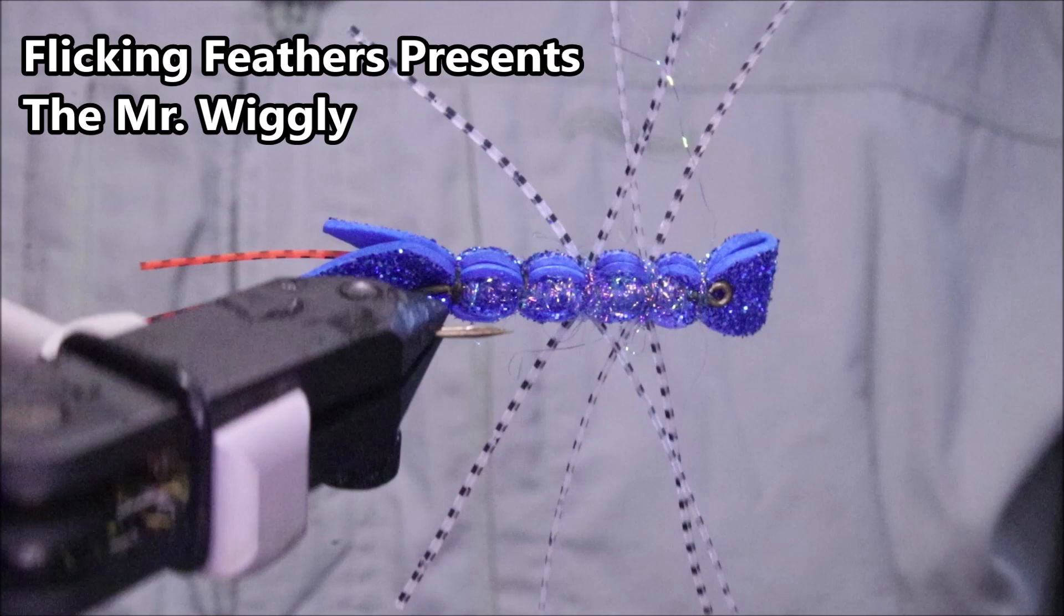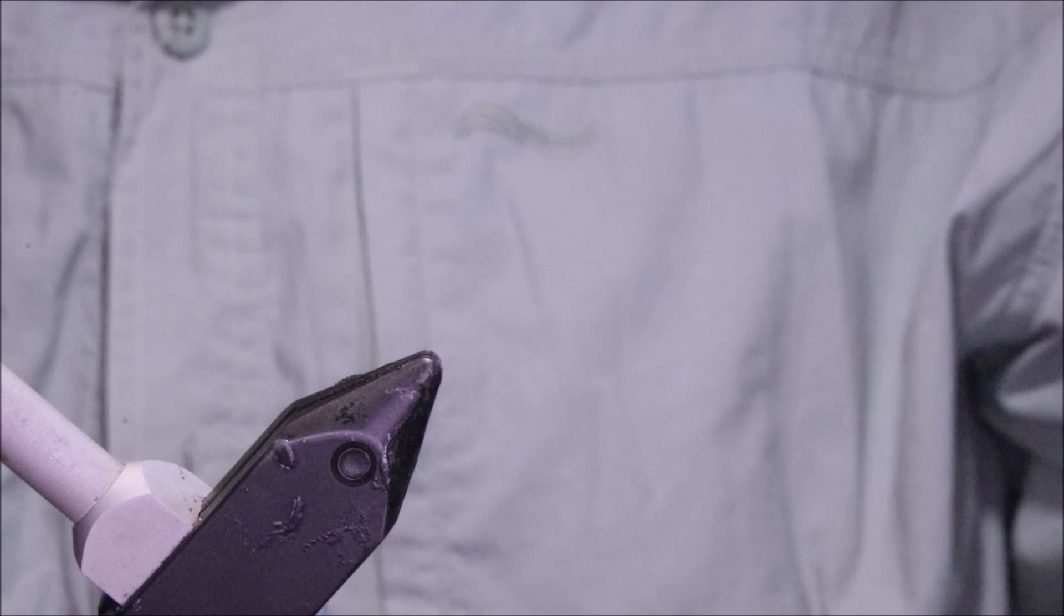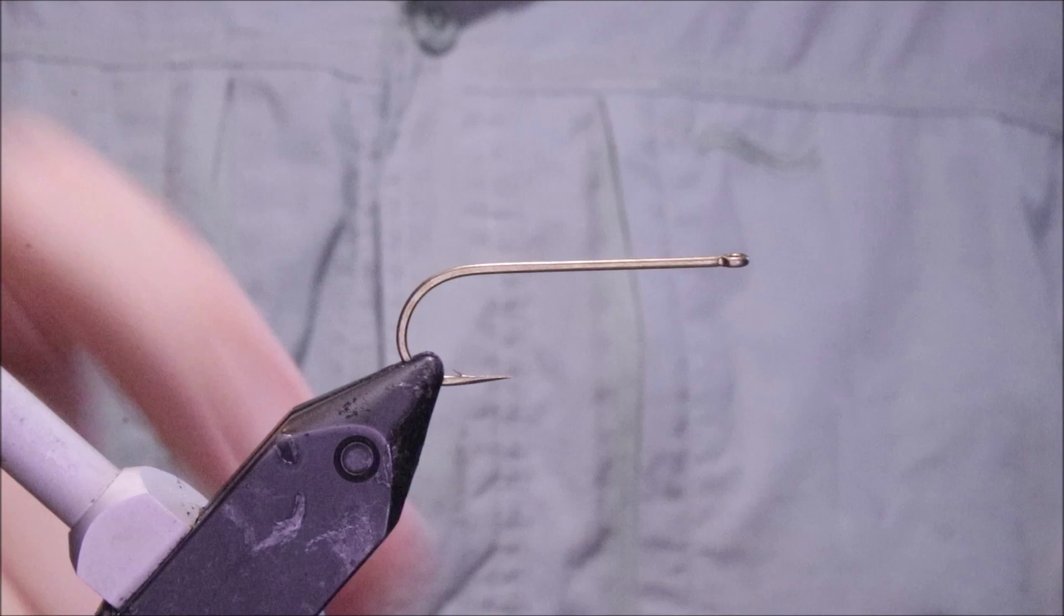Hi everybody, Martin at Flickin' Feathers again today and I'm tying a Mr. Wigley, it's a damselfly. This is a great pattern for smallmouth in the summer, especially when the fishing pressure has switched them off the poppers and the kind of more intrusive topwater flies. These kind of things can be great.